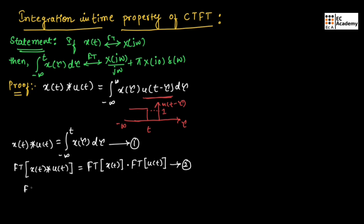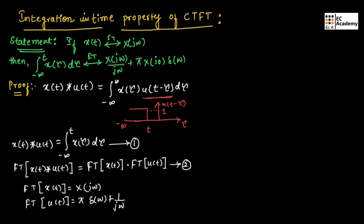Now, we know the Fourier transform of x of t, which we can write as x of j omega. And the Fourier transform of u of t, we can write as pi delta of omega plus 1 by j omega. Now, let us substitute these two values in equation number 2.